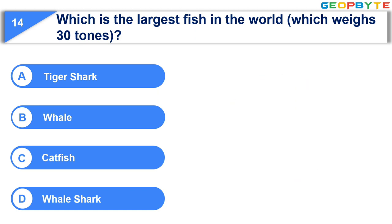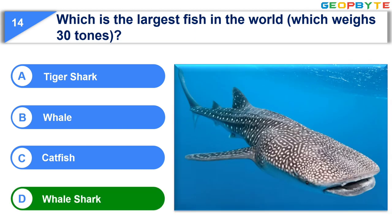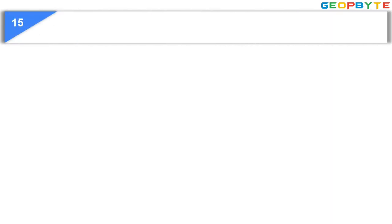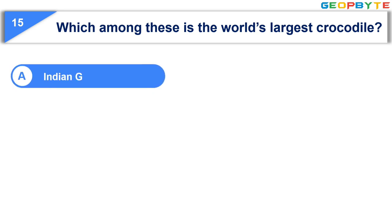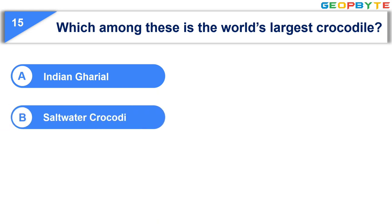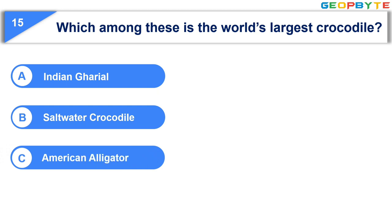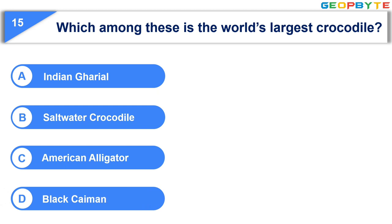Your time is up and the correct answer is Option D: Whale shark. The fifteenth question is: Which among these is the world's largest crocodile? Option A: Indian gharial. Option B: Saltwater crocodile. Option C: American alligator. Option D: Black Caiman. Your time starts now.